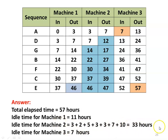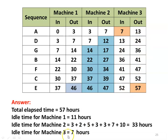Machine 3 timeline: 13, 13 — 24, 24 — 36, 36 — 41, 41 — 47, 47 — 52, 52 — completely busy. Initially waiting for 7 hours. These are the idle times for the different machines.